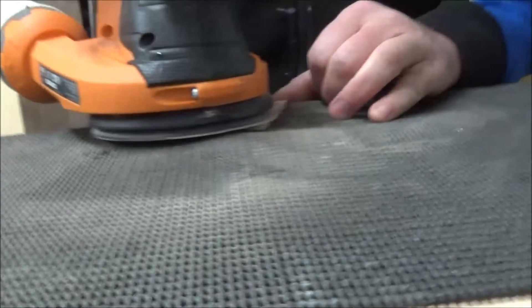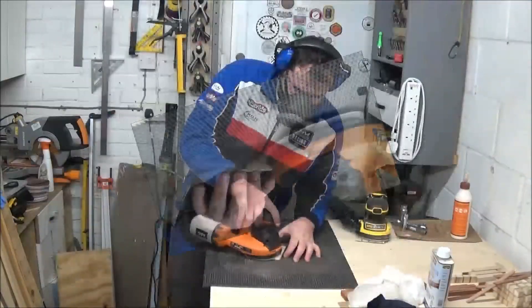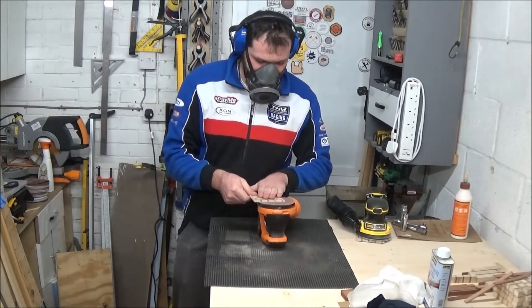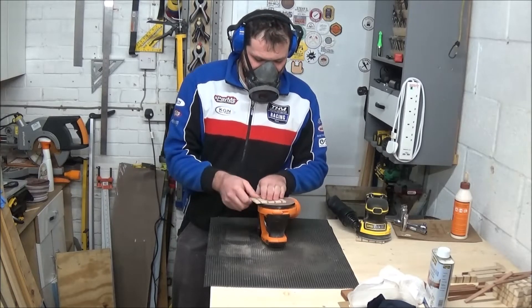Then I moved on to finer sanding with the AEG sander with 180 and 240 grit papers because it has a better extraction system than the Stanley. I get hardly any dust using this one.